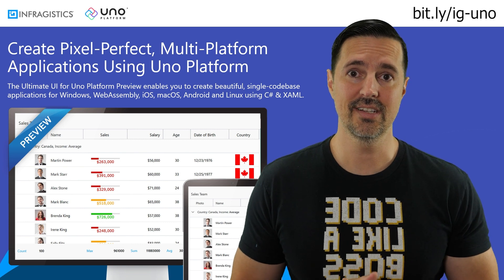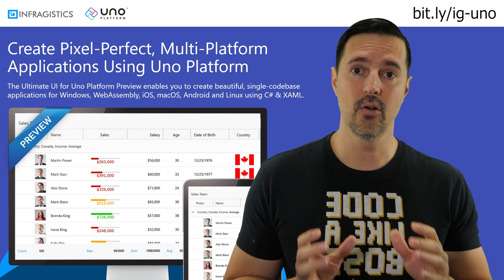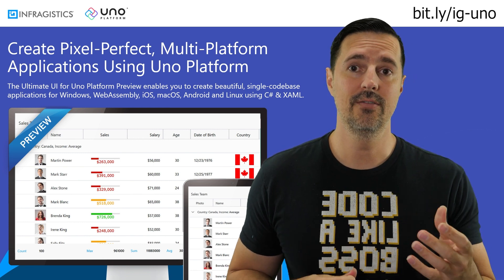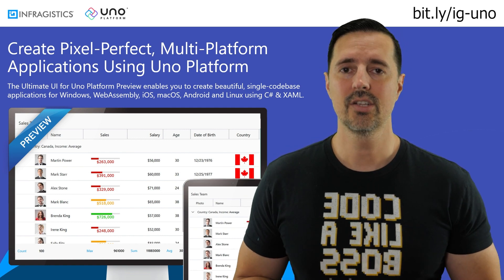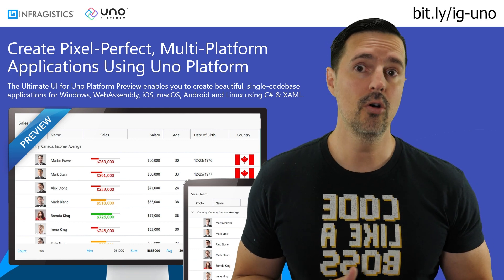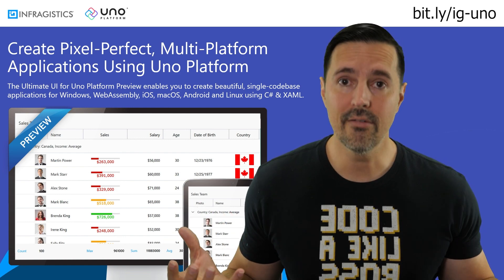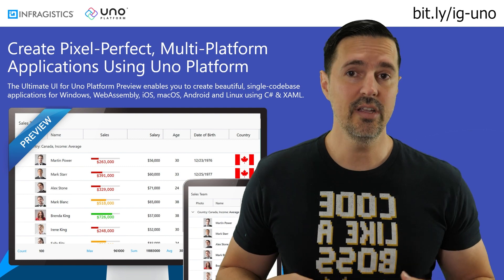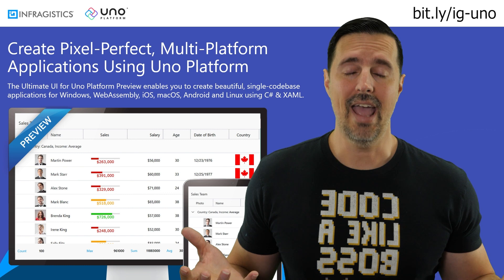I'm excited to announce that Infragistics has been building a brand new product called the Ultimate UI for UNO Platform. Ultimate UI for UNO Platform is a set of UI controls for you to use in your own cross-platform UNO applications. For example, if you're building a cross-platform UNO application and you need a data grid because you have a million records that you need to render in your app, and you need editing and sorting and grouping and filtering and all these great features that a data grid has.